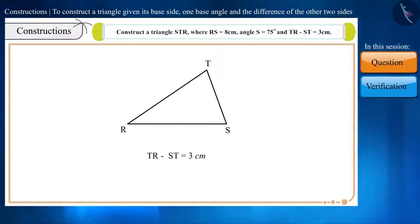It is given in the question that the measure of TR minus ST is 3 cm, from which we get to know that side TR is the larger side. We are given the measurement of angle S, but in TR, S is not there.